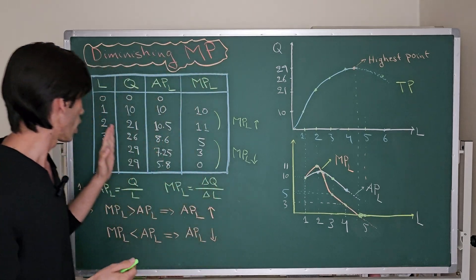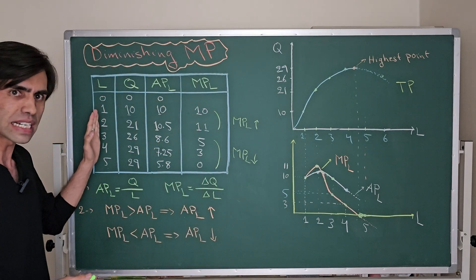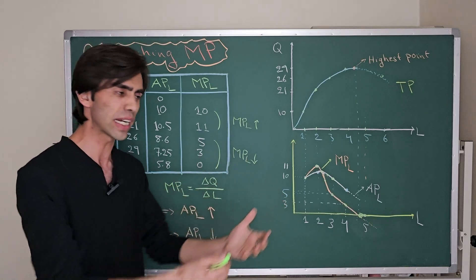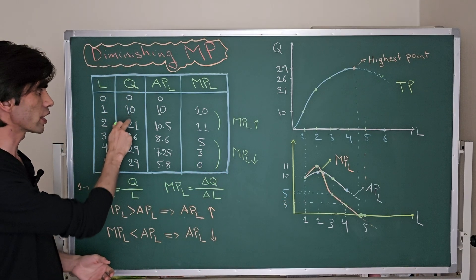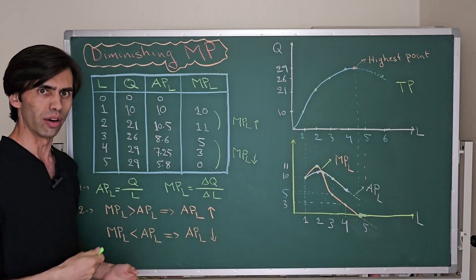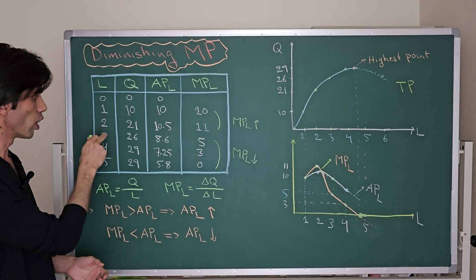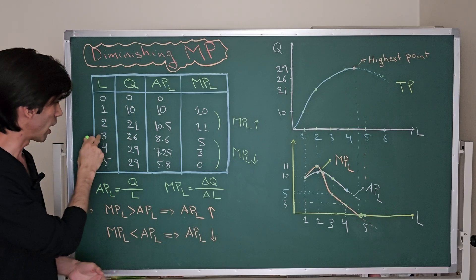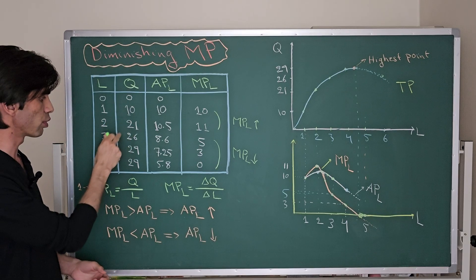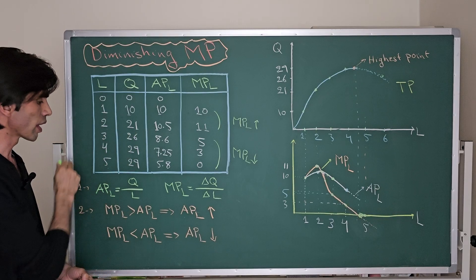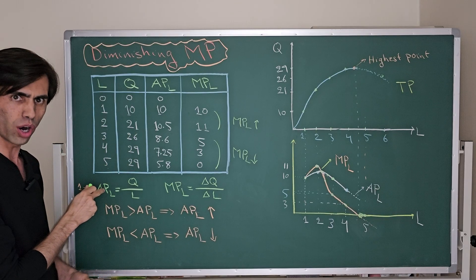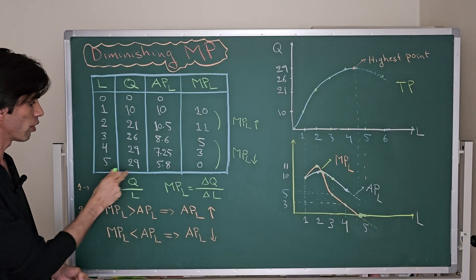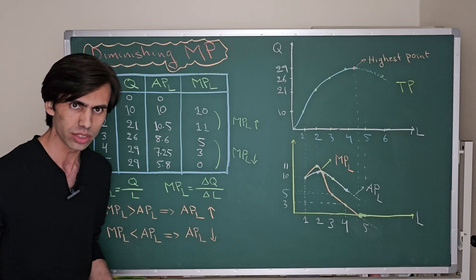If you start with the first worker for producing your pizza for your customers, they will produce 10 pizzas within one hour. When you have two workers, they will produce 21 units. When you have three workers, they will produce 26 units. When there are four workers, they will produce 29 units. When there are five workers, they will produce 29 units.